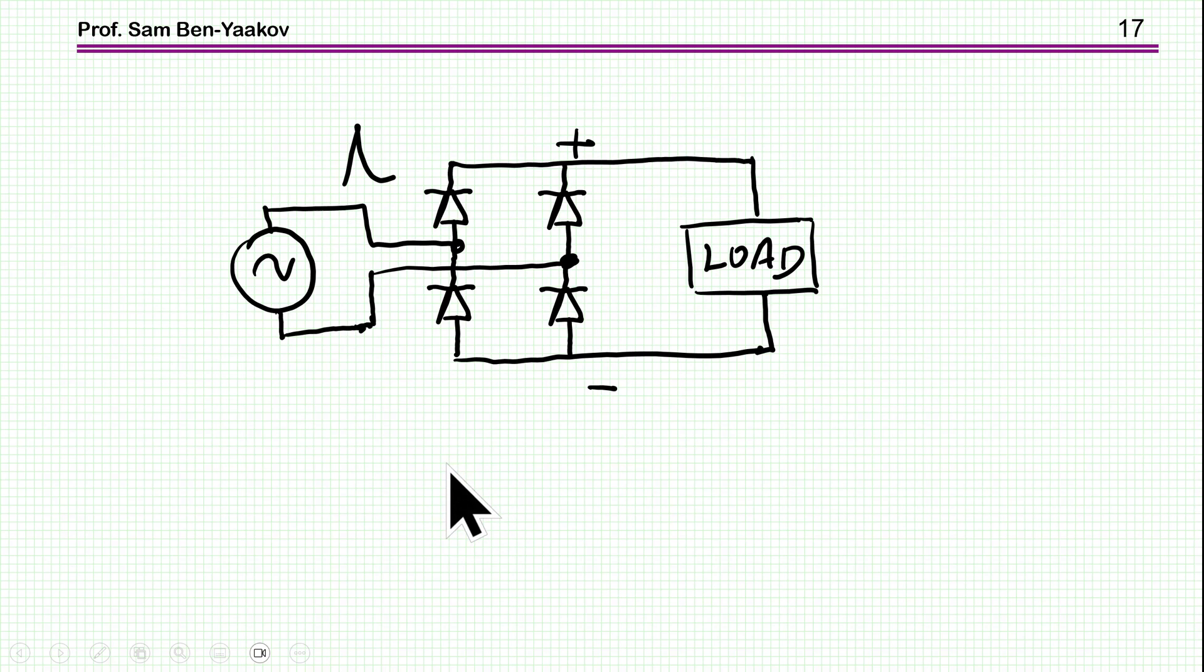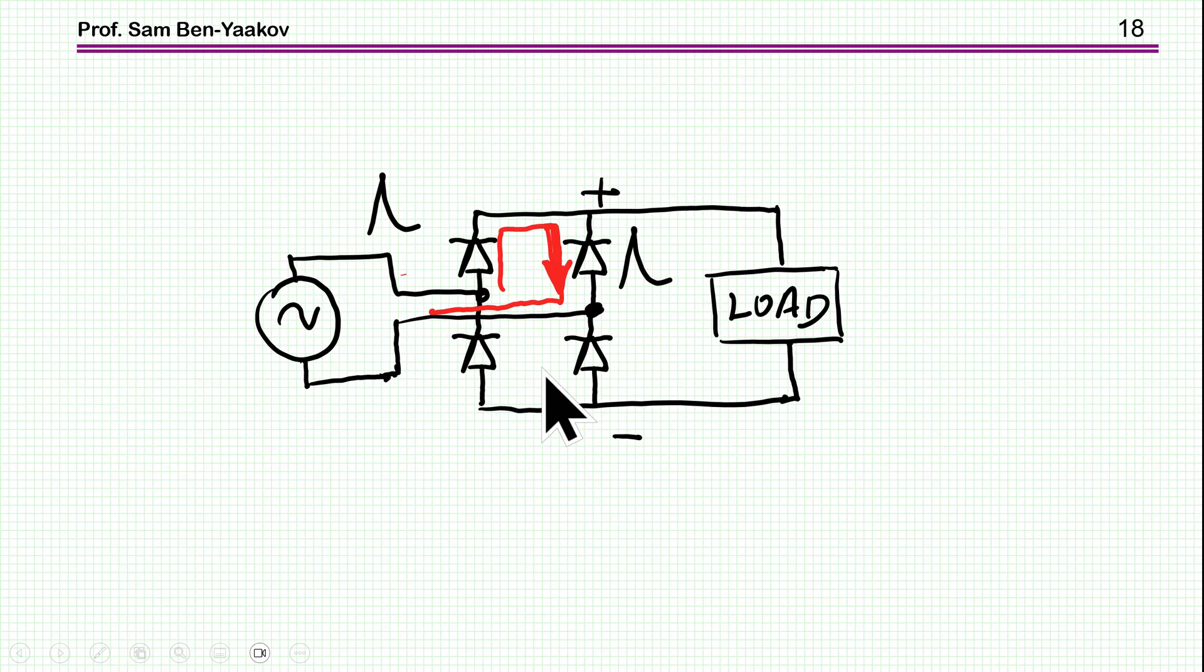Now, another possible application of this ESD capable diode, which has been suggested, is to use it here for a full wave rectifier. The idea is that if you have a full wave rectifier and then you have a pulse, an ESD pulse, a high pulse, then some of the diode will break down. So let's have a look at it. Suppose that we are in the positive half cycle, this diode is conducting, and then you see that this diode now will see the ESD pulse. Coming here through this, up to this diode, and it will break down.